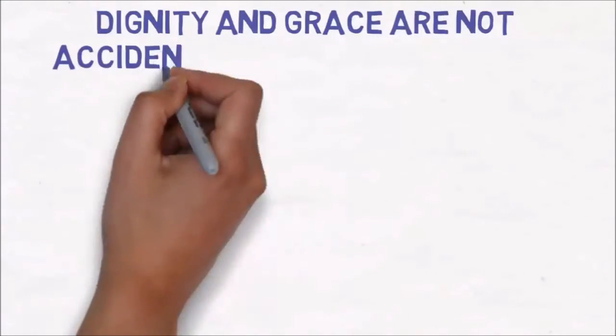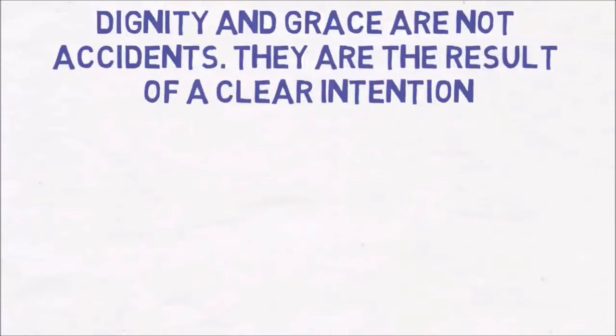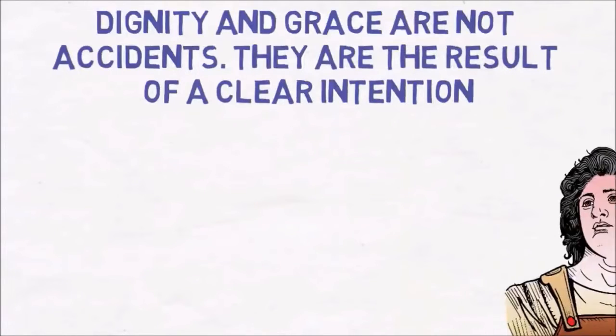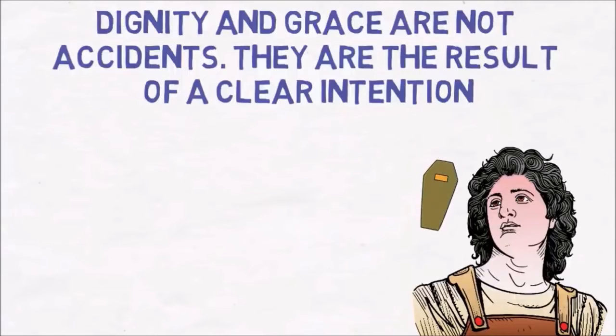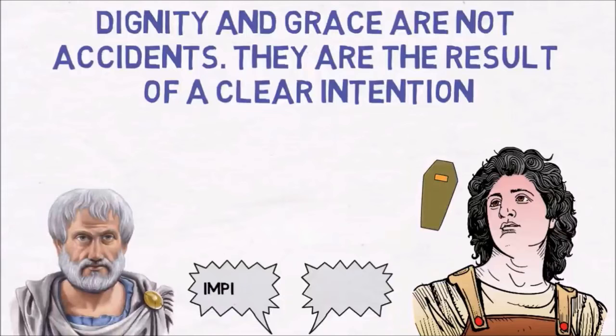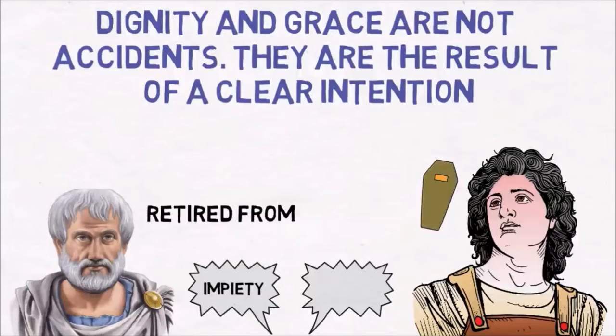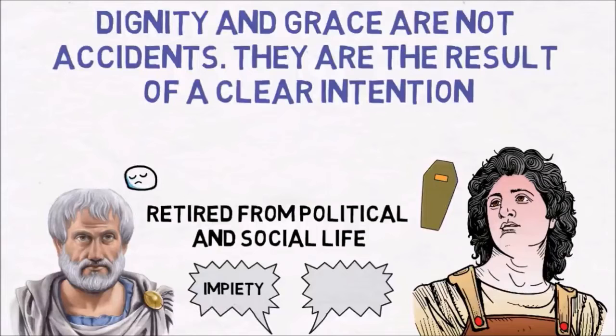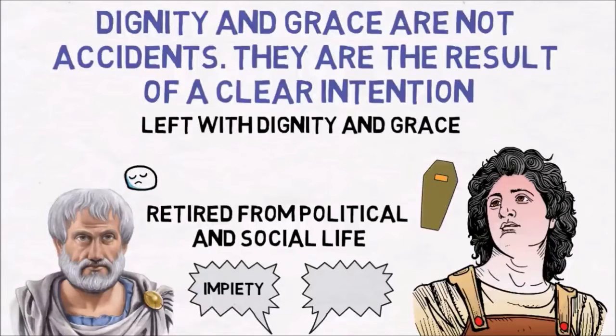Dignity and grace are not accidents, they are the result of a clear intention. After Alexander the Great died, people started to develop negative sentiment for him. Aristotle was accused of impiety and forced to run away from Athens, leaving for Chalcis in Euboea Island, retiring from political and social life. Although saddened by this, Aristotle left with dignity and grace, but not without saying, I will not allow the Athenians to sin twice against philosophy, meaning that he will continue his work in philosophy no matter what the Athenians do.